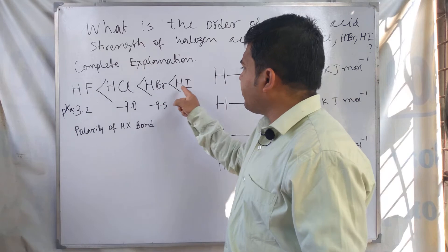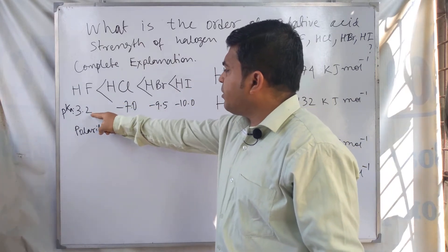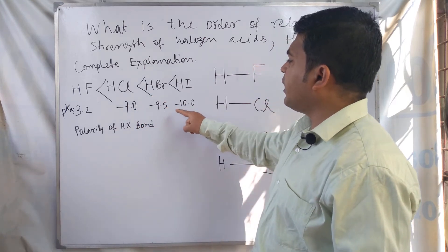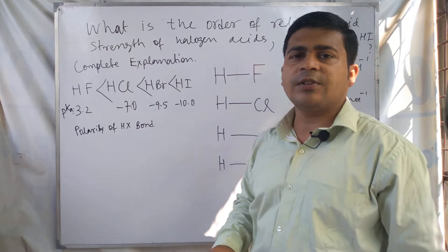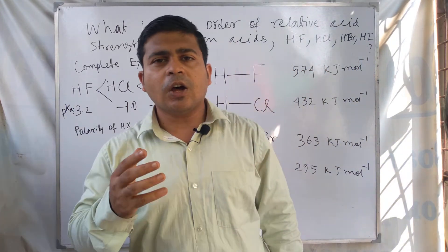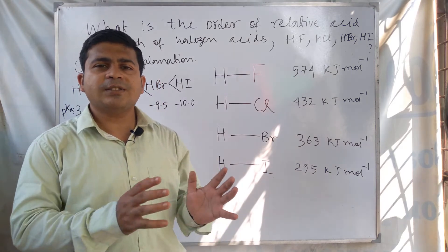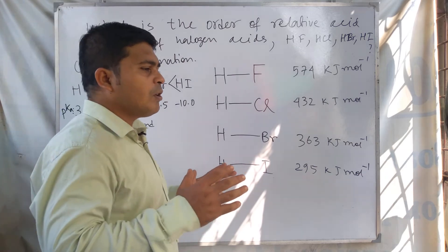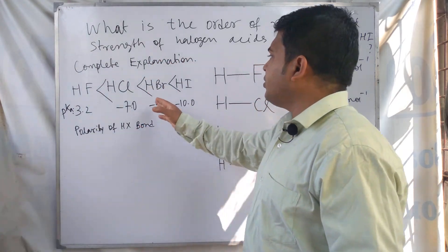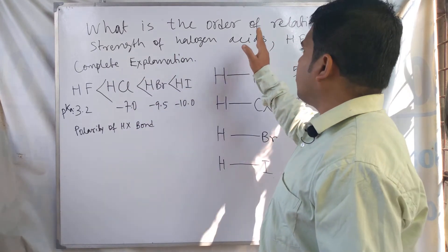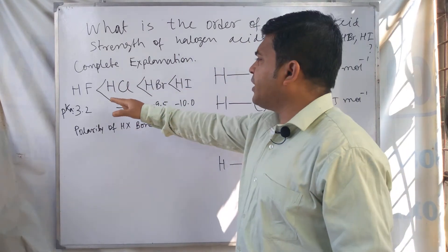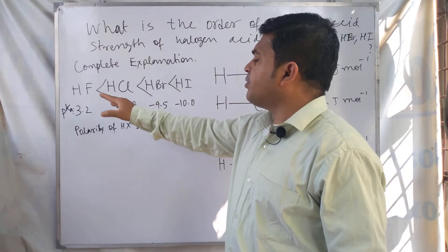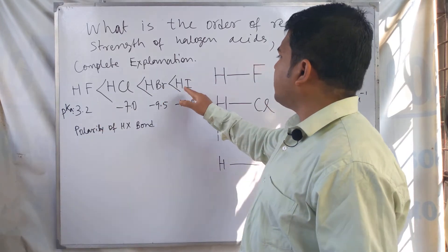This order of acid strength of the halogen acids is confirmed by the pKa values. The pKa value of HF is 3.2, HCl is −7, HBr is −9.5, and hydroiodic acid is −10. We know that a lower pKa value means a stronger acid, and the lowest pKa value is for HI. Therefore, HF is the weakest acid and HI is the strongest acid.